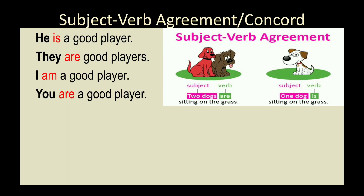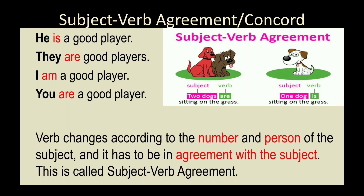Have a look at these examples: 'He is a good player,' 'They are good players,' 'I am a good player,' 'You are a good player.' The subjects are highlighted in black and the verbs in red. The verbs keep changing according to the subject — in terms of person (first, second, or third) and in terms of number (singular or plural).